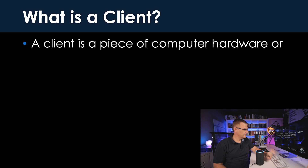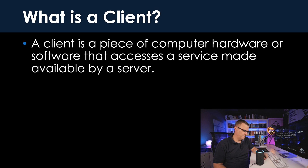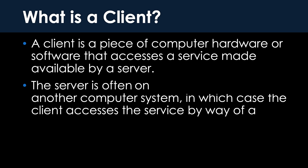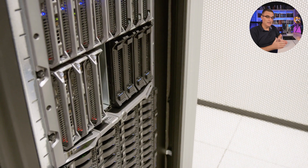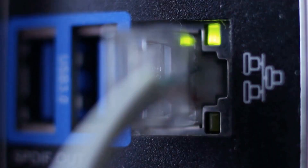A server is providing a service or functionality to clients in what's called a client-server model. So servers provide functionality to clients, and that begs the question, what is a client? Alexa, what is a client? A client is a piece of computer hardware or software that accesses a service made available by a server. The server is often on another computer system, in which case the client accesses the service by way of a network.